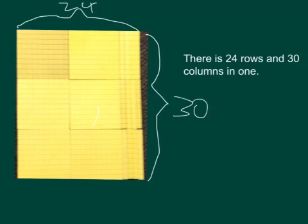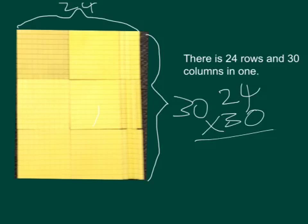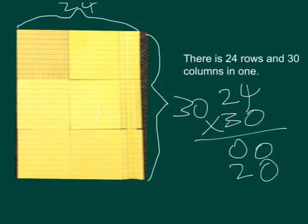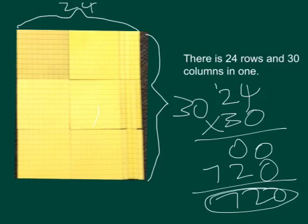There are 24 rows and 30 columns. So I multiply 24 by 30: the units digit gives 0. And 2 — 1 is going up, 2 by 3 is 6, but I have a 7, so the answer is 700. This is the multiplication of rows and columns.